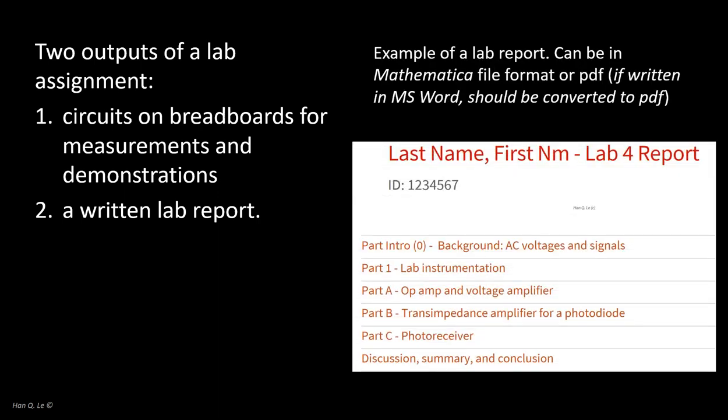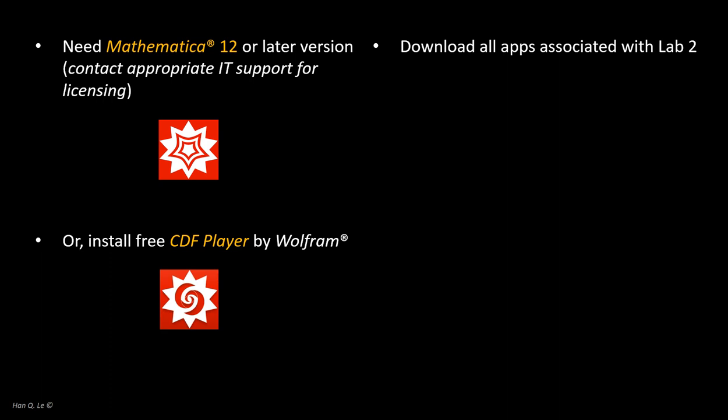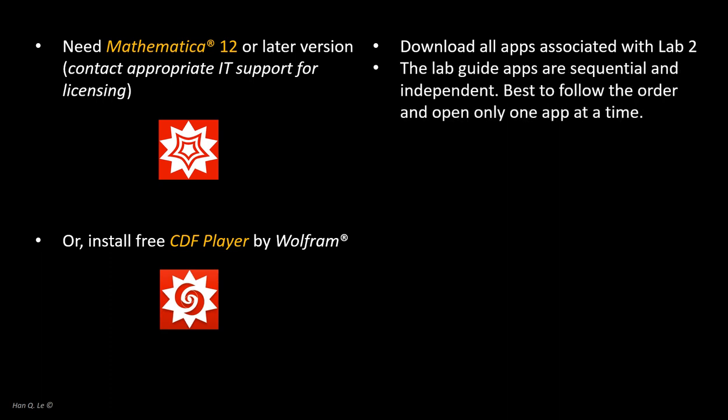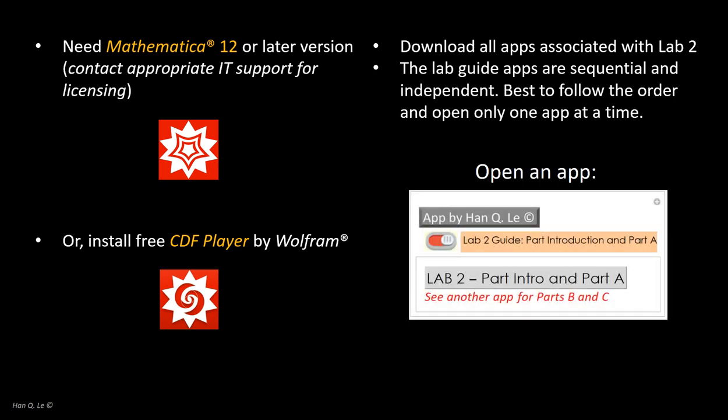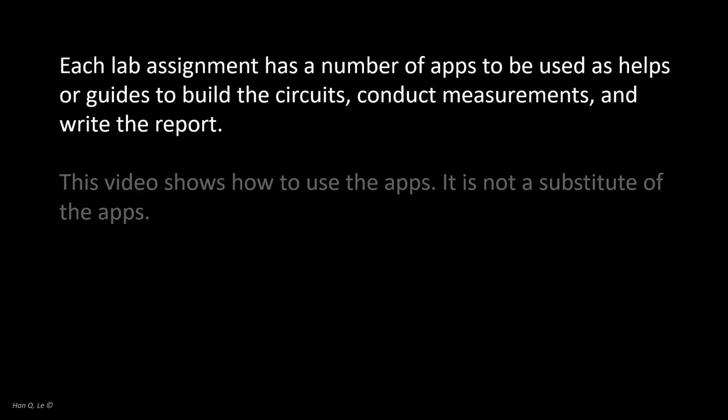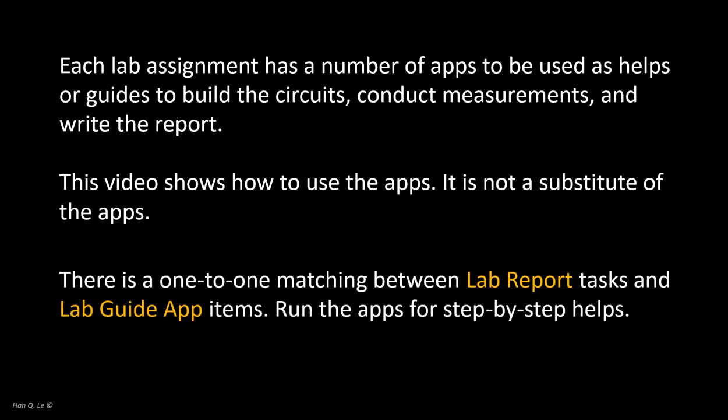This is the outline of a lab assignment report. It has several sections as shown. Each section contains several subsections, each consists of one or more tasks. A task can be a question, a calculation, or assignment to build circuits, or do measurements and demonstrations of the circuits. To complete a lab assignment, do every task in the lab report outline. There is one-to-one matching between the list of tasks and the lab guide app items.